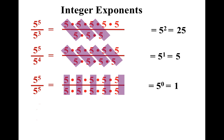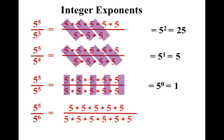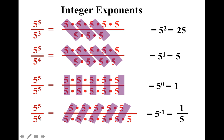Let's take it one step further. What if I had 6 fives in the denominator? Now when I simplify, where's the 5 left over? It's left over in the denominator. So when I subtract these numbers, 5 minus 6, or 5 plus negative 6, I end up getting 5 to the negative first power, which means that my 5 was left over in the denominator. My negative exponent tells me where the 5 is located.